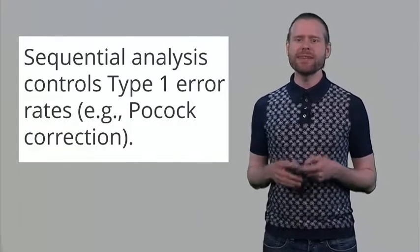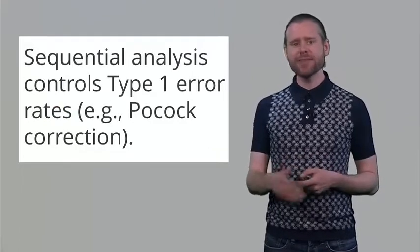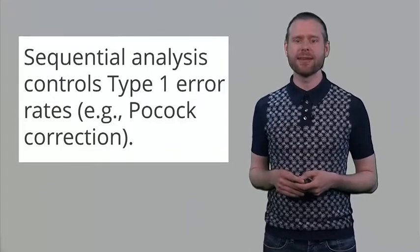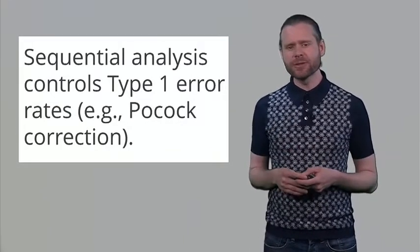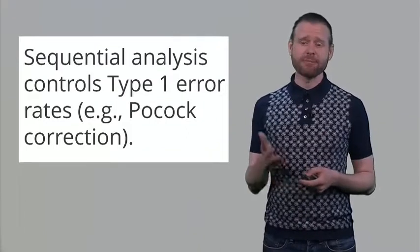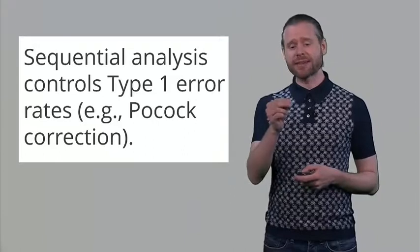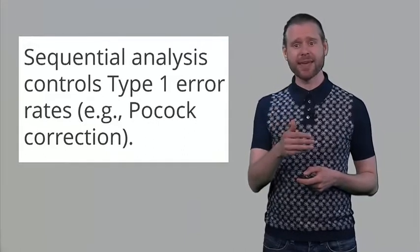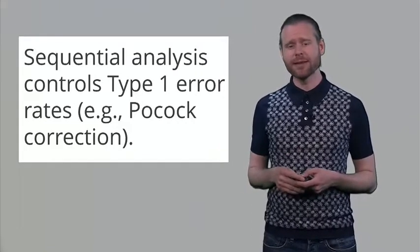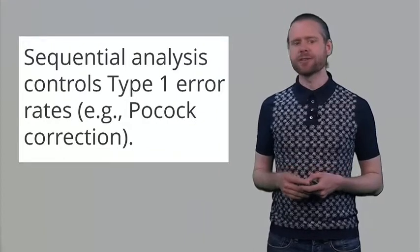A proper technique to handle this is sequential analysis, which allows you to look at the data repeatedly while controlling your Type 1 error rate. It uses something similar to a Bonferroni correction but is more efficient. You could simply decide how often to look at the data — say 4 times — and divide the alpha level by 4. The sequential analysis approach is slightly more flexible and efficient than a simple Bonferroni division.